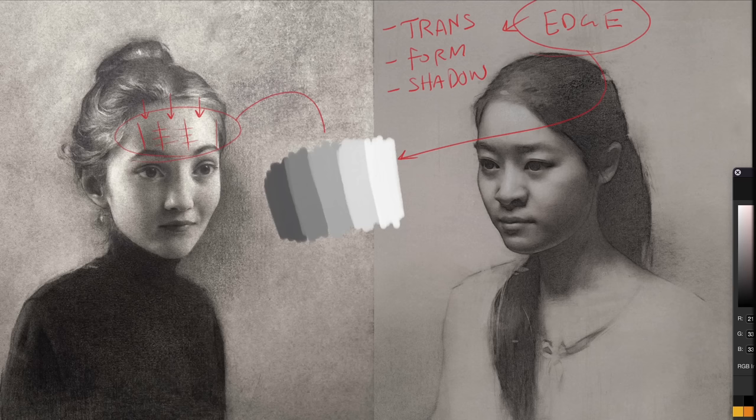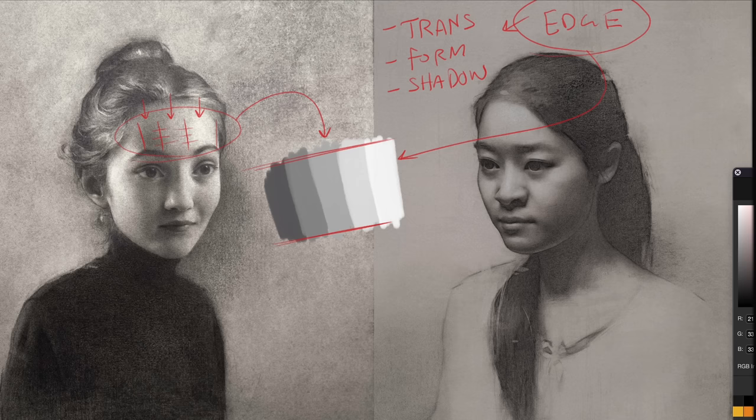We have a transition of values with incredibly soft edges, as compared to this transition where we have a transition of values that has a very staccato edge in between each of those successive values.